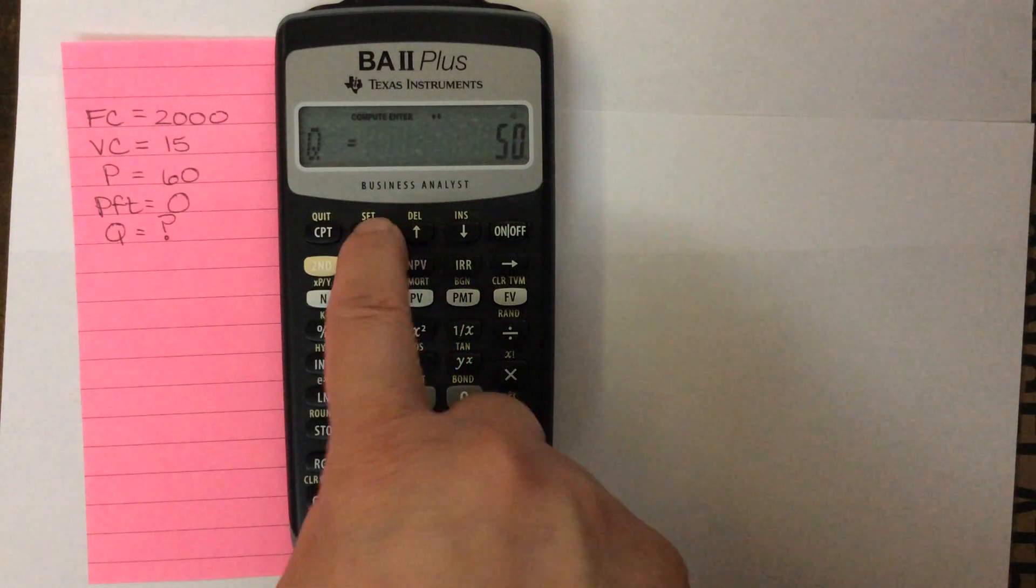So if I change my quantity, whoops, enter, and I want to compute my variable cost, it will compute that based on the new quantity.